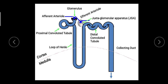As blood reaches the glomerulus, it is filtered by Bowman's capsule — the non-essential waste material from the blood gets filtered. After filtration, the filtrate reaches the proximal convoluted tubule (PCT), where reabsorption of sodium chloride, calcium ions, bicarbonate, phosphate ions, some amino acids, and low molecular weight proteins takes place. The required essential ions get reabsorbed back into the blood.